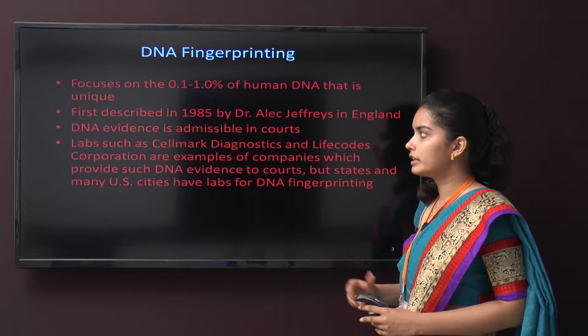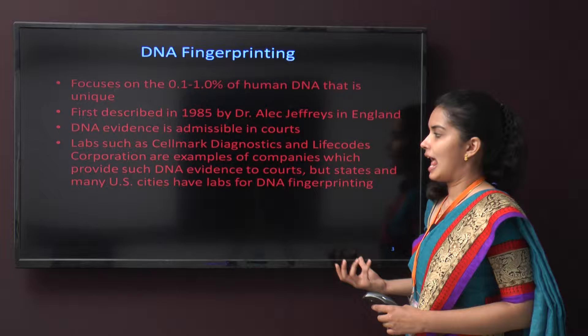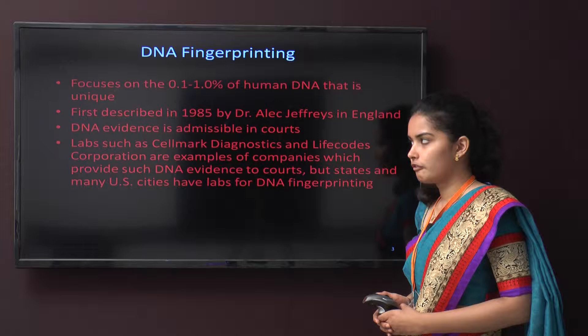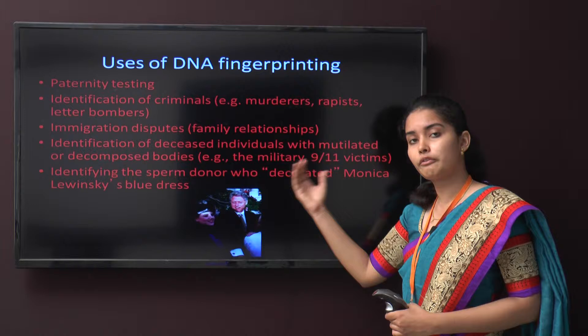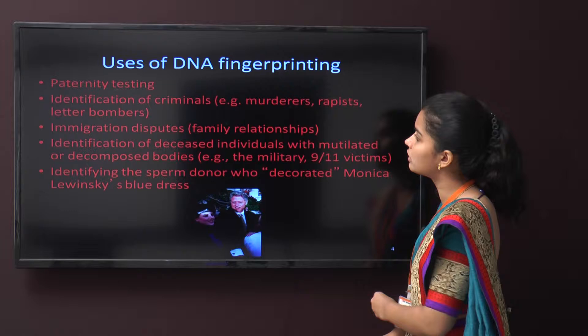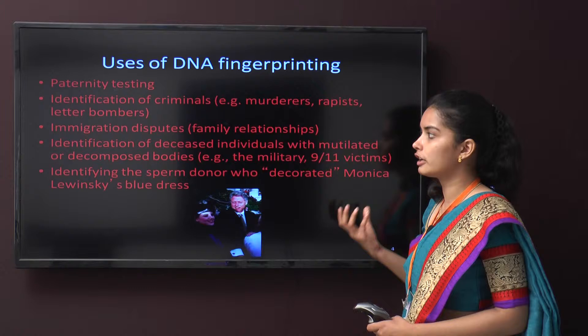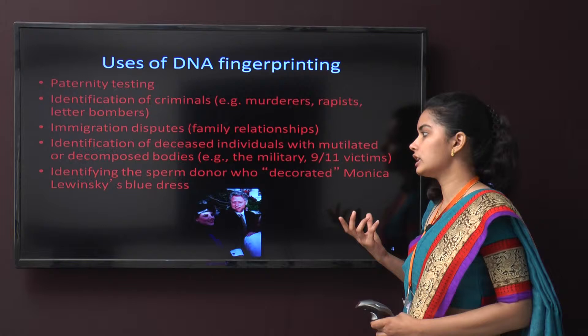DNA evidence is admissible in courts. Labs such as Cellmark Diagnostics and Lifecodes Corporation provide DNA evidence to courts, and many US states and cities have their own DNA fingerprinting labs. It is used for paternity testing, identification of criminals such as murderers and rapists, immigration disputes, identifying deceased individuals with mutilated or decomposed bodies, and identifying sperm donors.